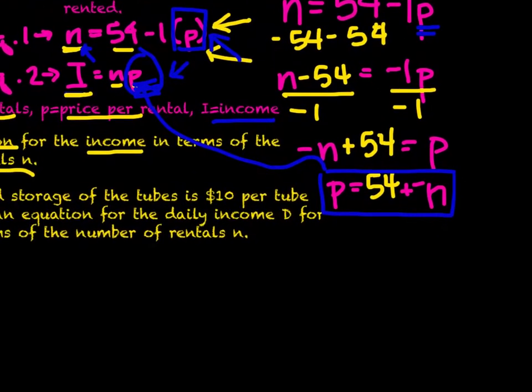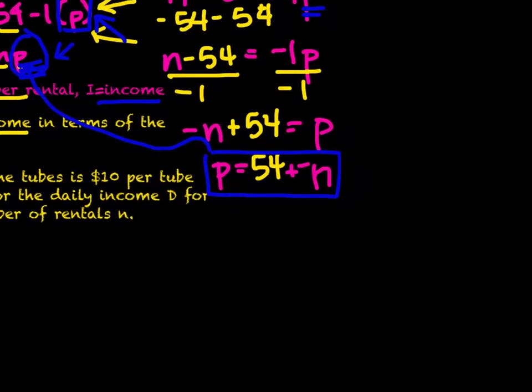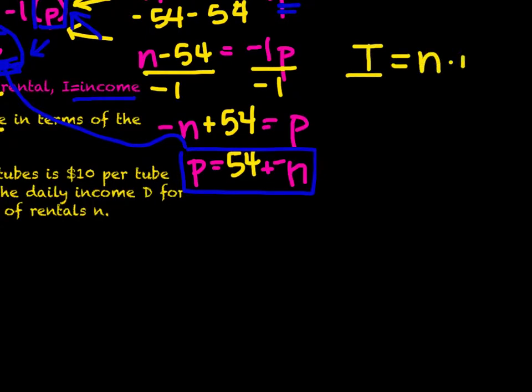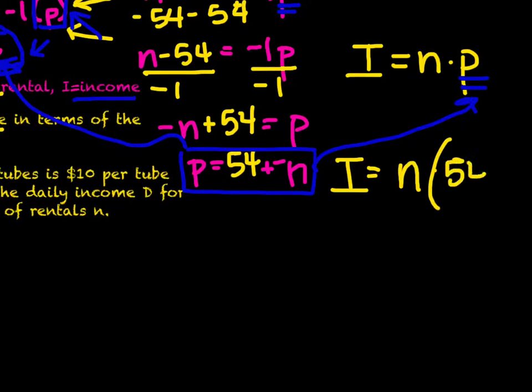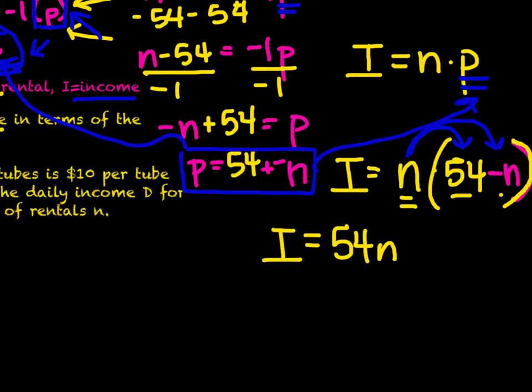So I'm going to put this information right here into this equation for p. Let's find out the income in terms of the number of tubes rented. We have our second equation: i equals n times p. Instead of writing p, we're going to write 54 minus n. So the income from the tubes equals the number of tubes rented times (54 minus n). That is our equation. We can do a little bit more with this equation if we want to. I'm going to distribute this n in here, and I'll get i equals n times 54, or 54n, and n times negative n, or negative n squared.